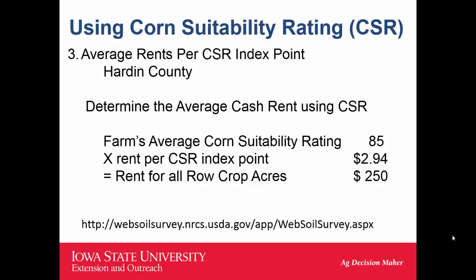Another way to look at land quality is the CSR 2 rating index. Taking the $250 county rent divided by the 85 CSR rating gives about $2.94 per point. So if your farm is a 70 CSR, you could multiply 70 times $2.94 to estimate a starting point for rent, then compare to how your yields compare for that quality. The Web Soil Survey URL is listed on screen — you can go in and map out your fields to track down your farm's CSR rating, looking at the rating on the crop fields, not the whole farm including pasture or timber.